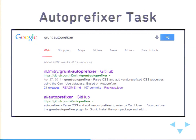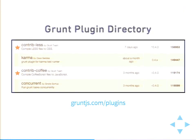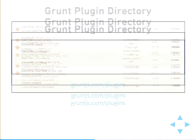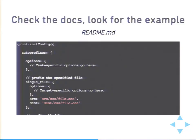Most often I just Google 'grunt auto-prefixer,' but I also like checking out the grunt plugin directory. Just go to the grunt website and it'll sort it by most popular — you'll notice that all the contrib ones are at the top. The first thing I usually do when I land on the project page is scroll immediately down to the bottom. You'll pretty much find a template for the task that you want — you might have to change a few variables and read which properties you need to change in the configuration, then copy and paste.